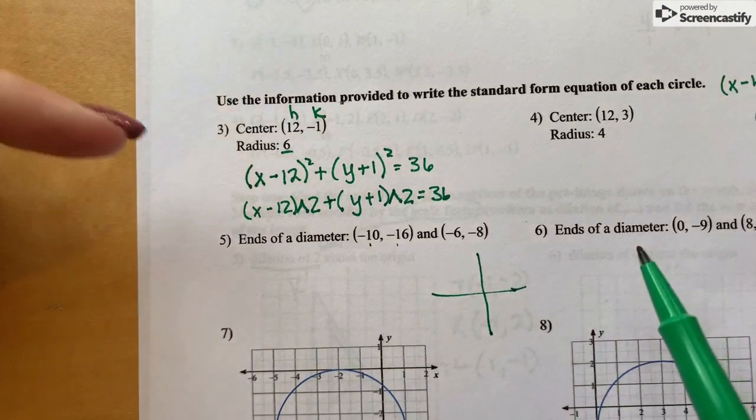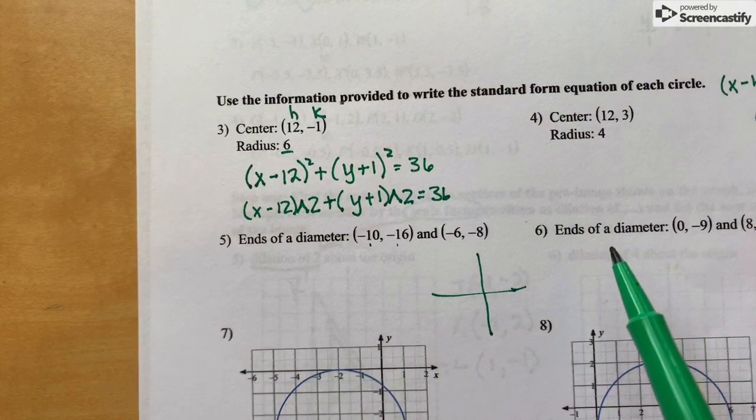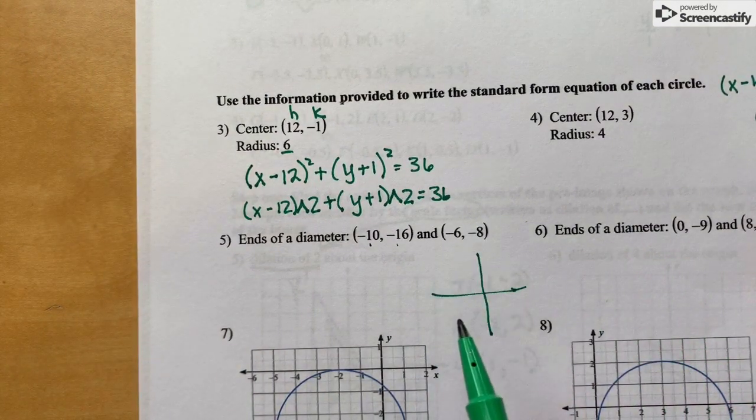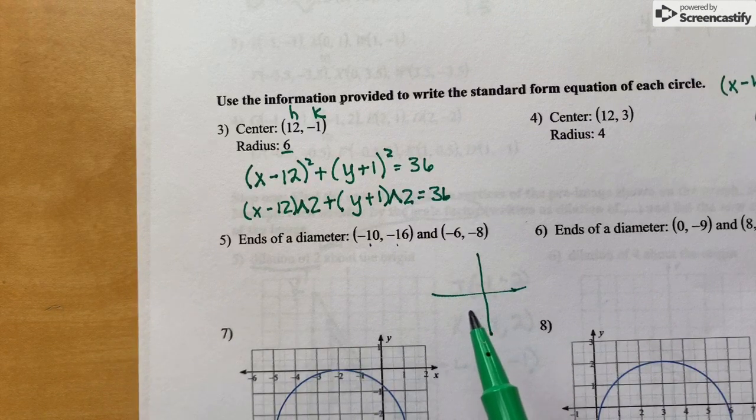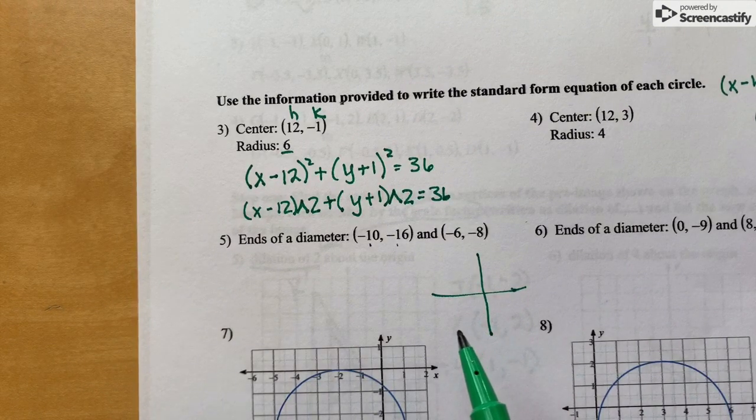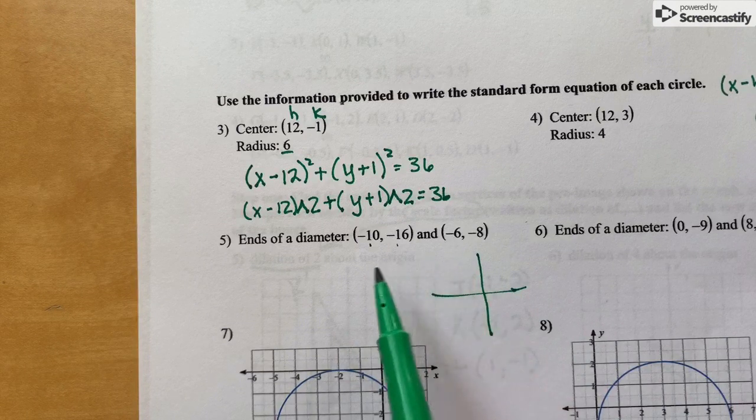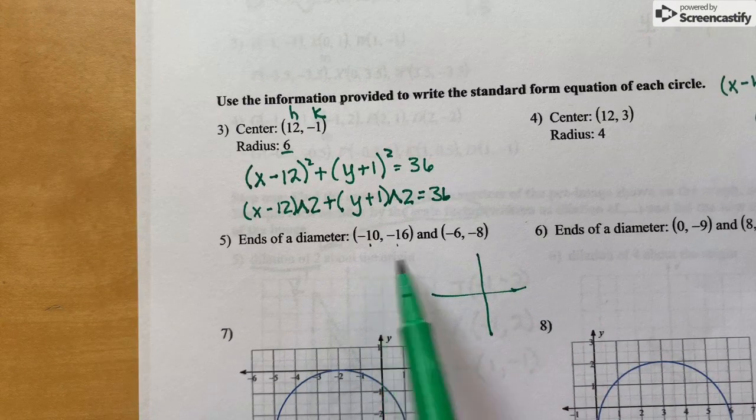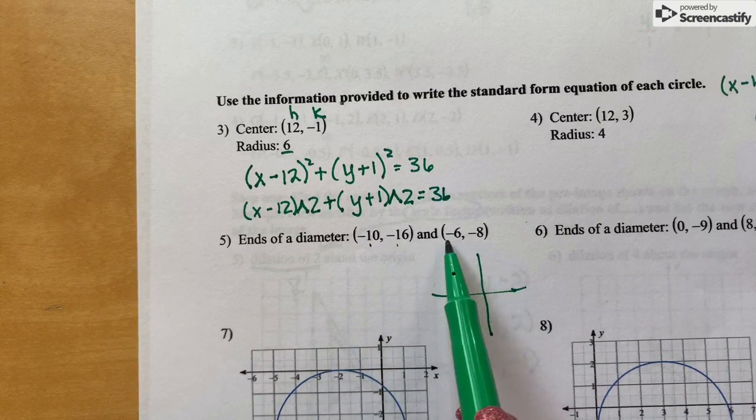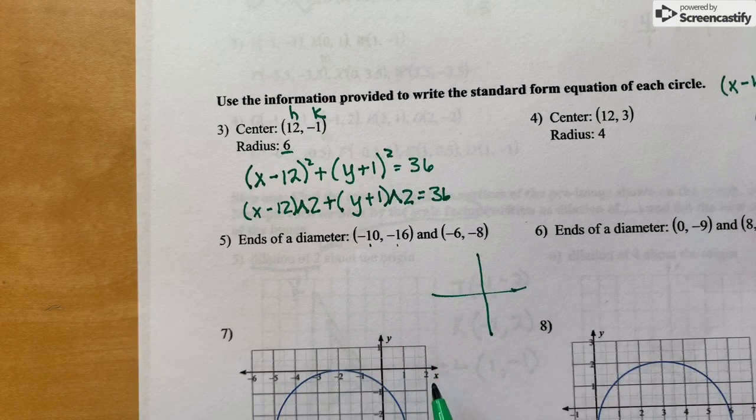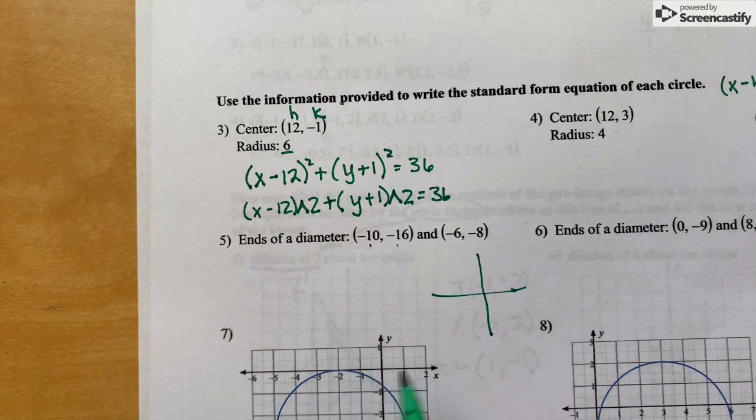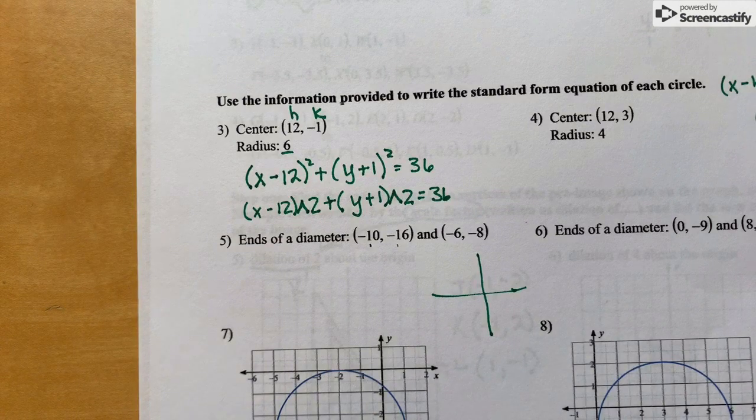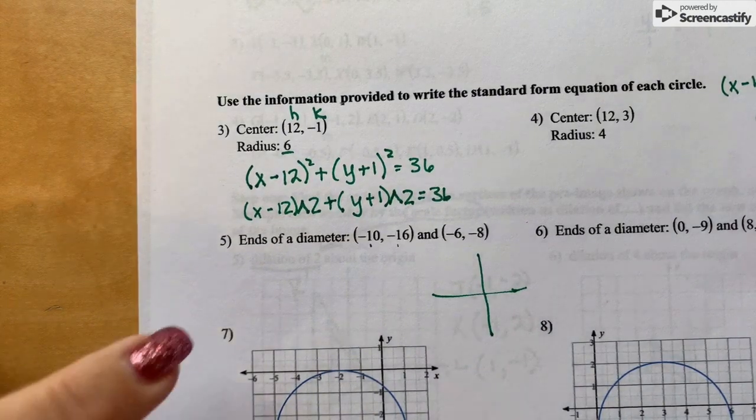Or just use the midpoint formula to find the midpoint between these two points. Once you find the midpoint, you could find the distance from the center to one of these points. That'll give you your radius. Then you'll use that center that you found to write the equation of the circle.